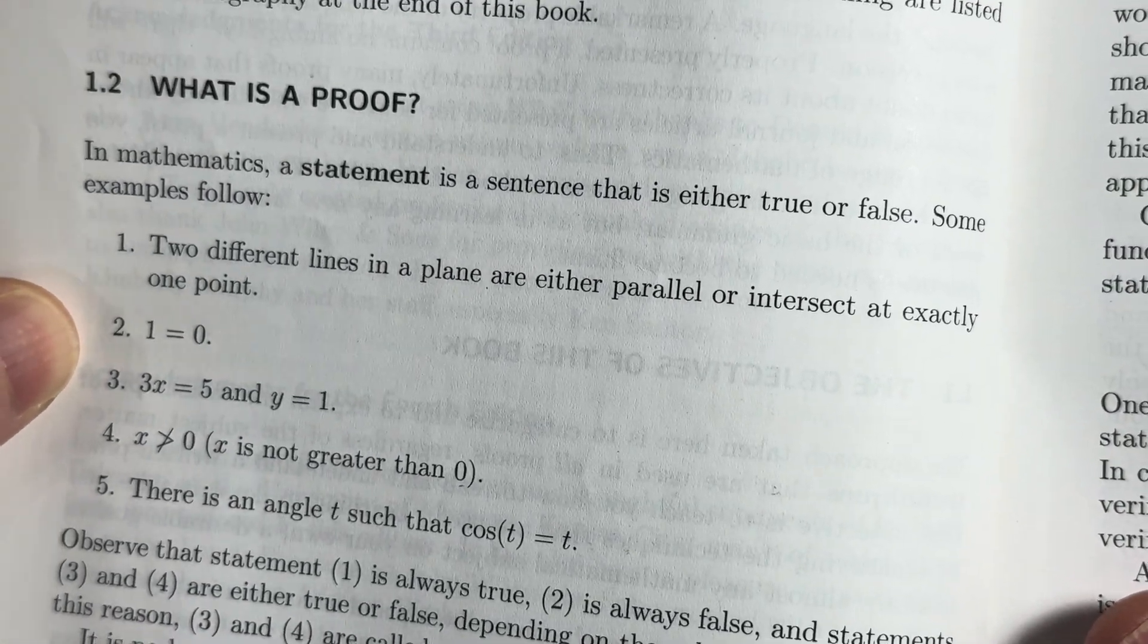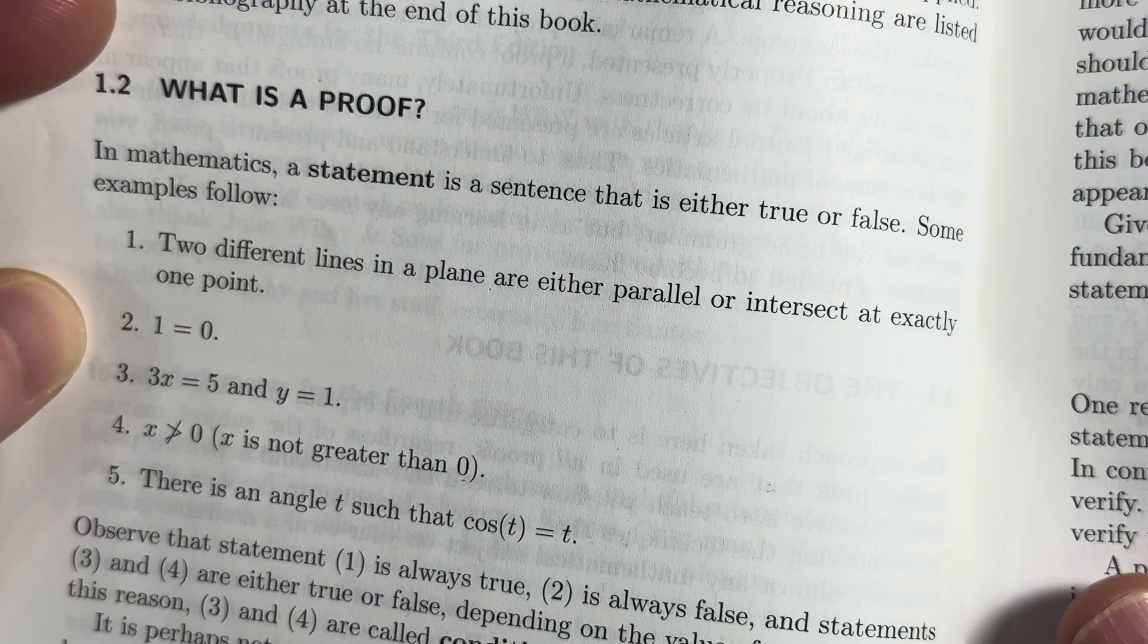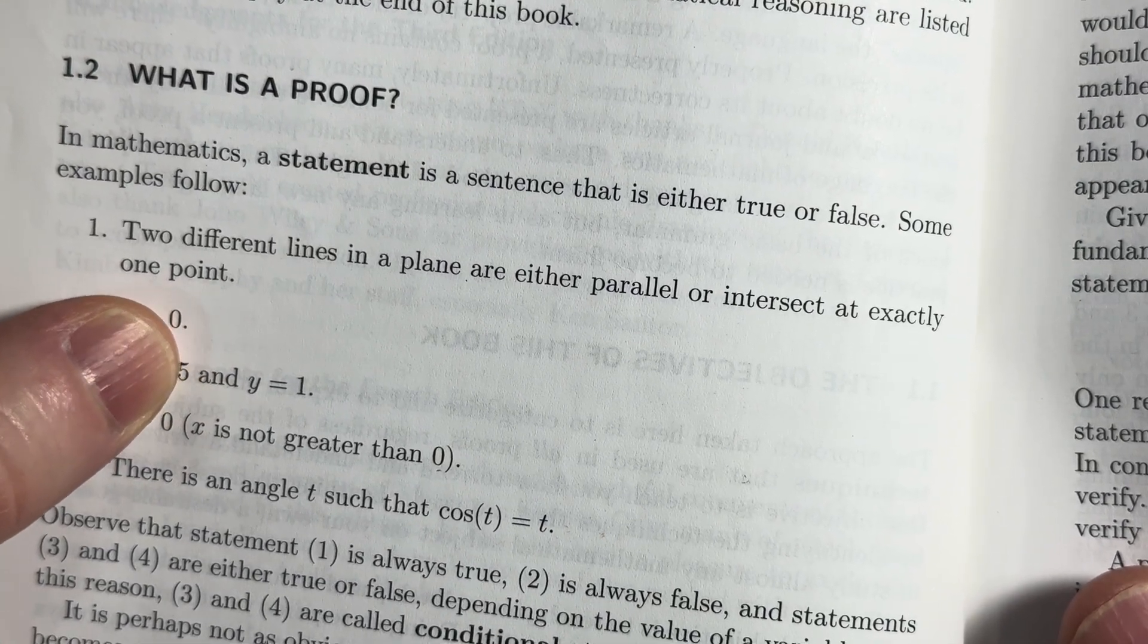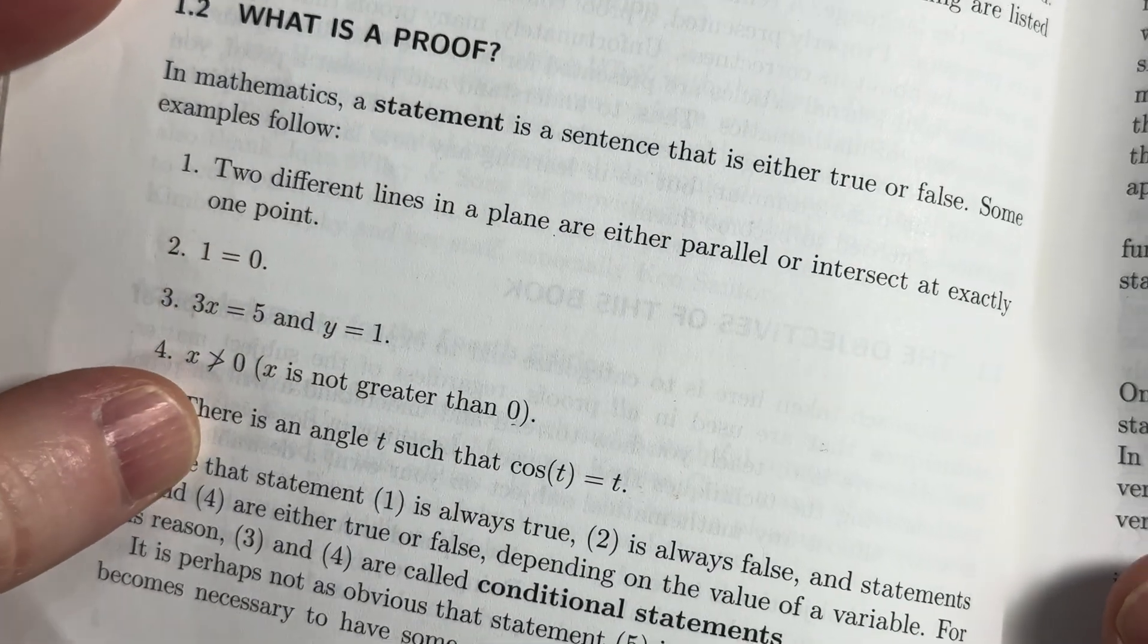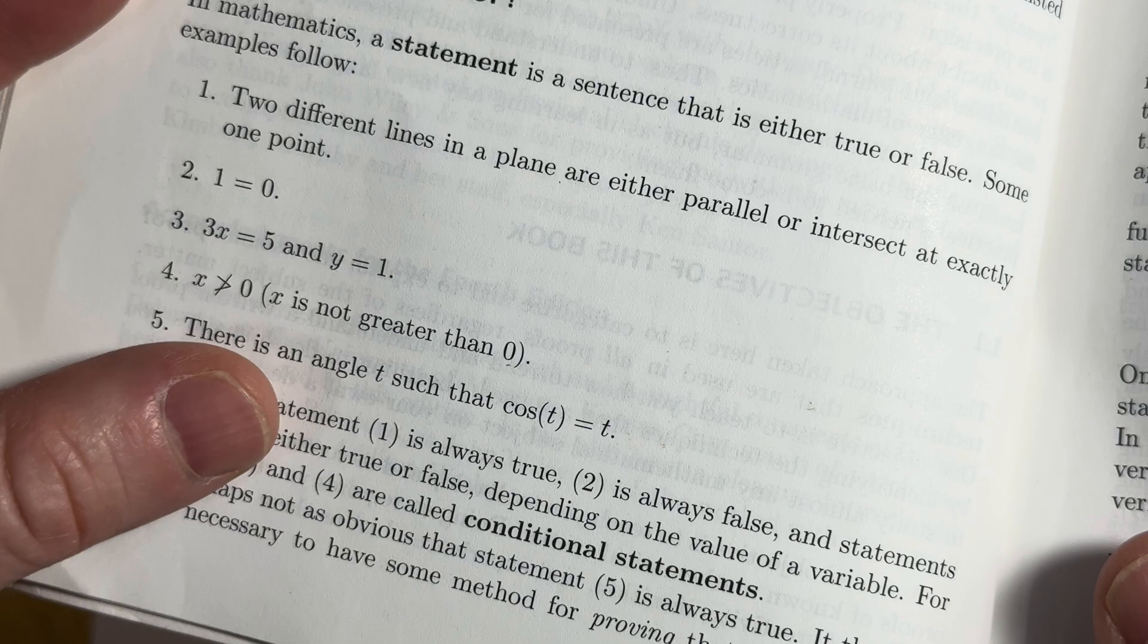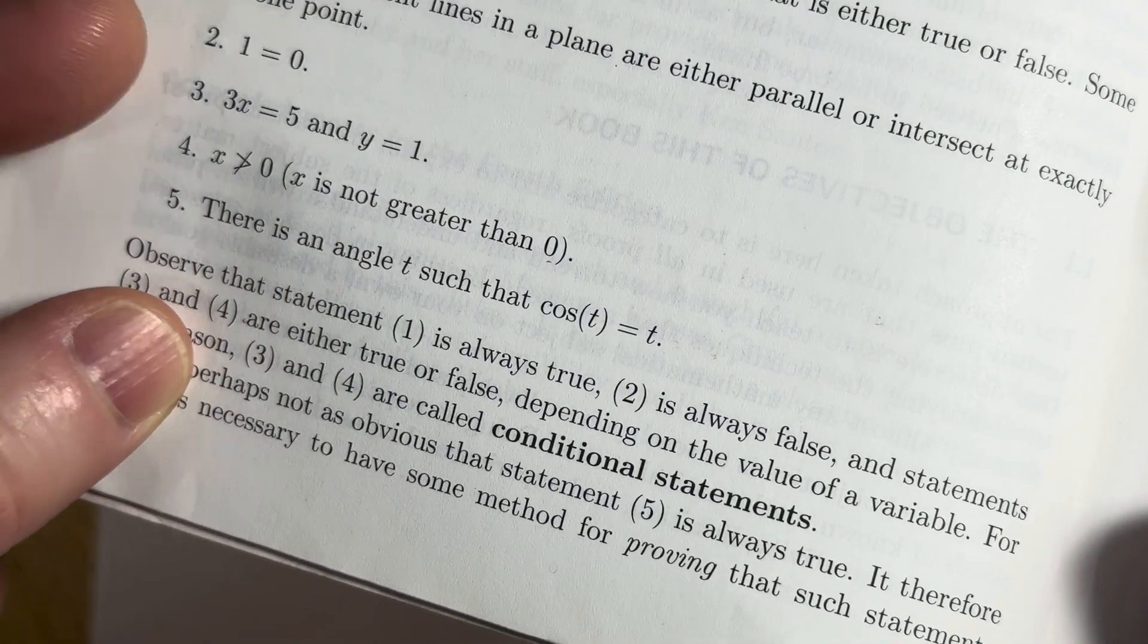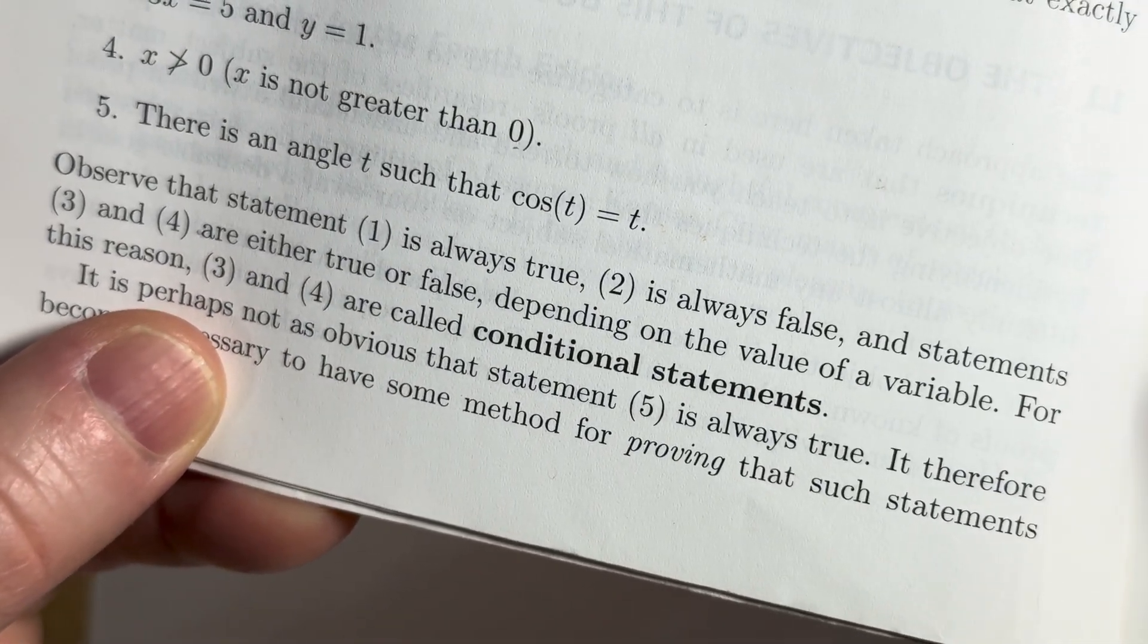Says here, in mathematics, a statement is a sentence that is either true or false. Some examples follow. Two different lines in a plane are either parallel or intersect at exactly one point. One is equal to zero. Three: x equals five and y equals one. X is not greater than zero. There is an angle t such that the cosine of t is equal to t. That's called a fixed point, by the way.